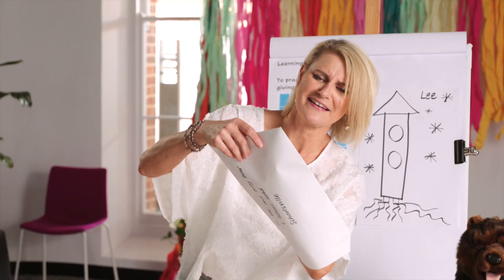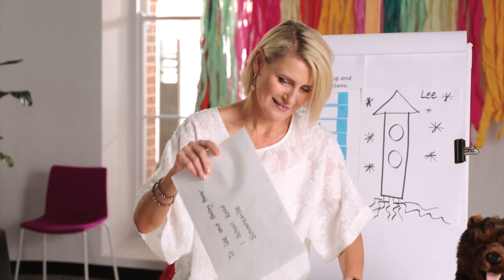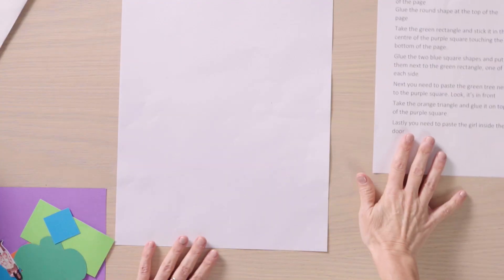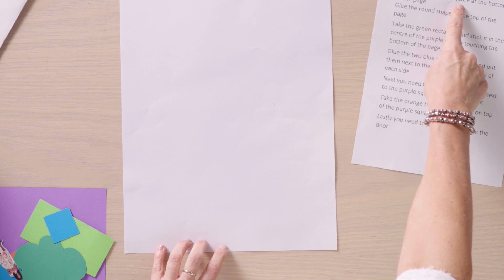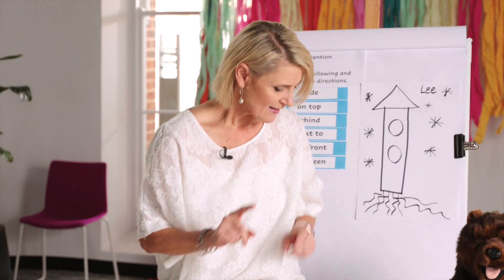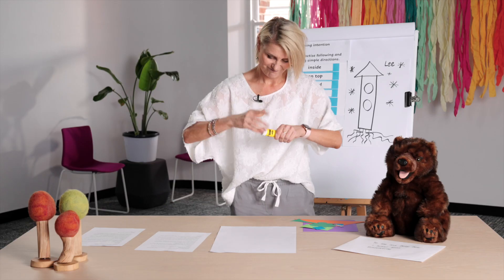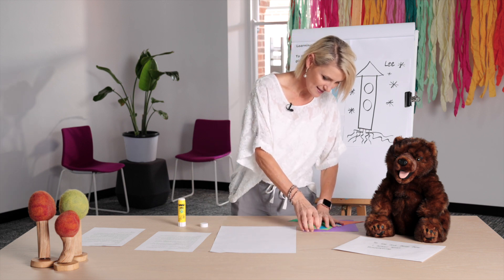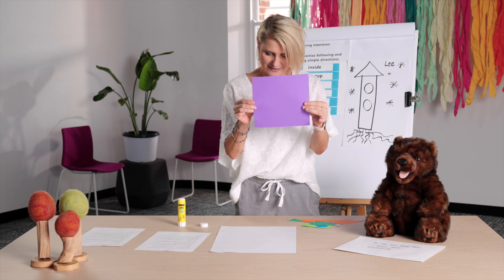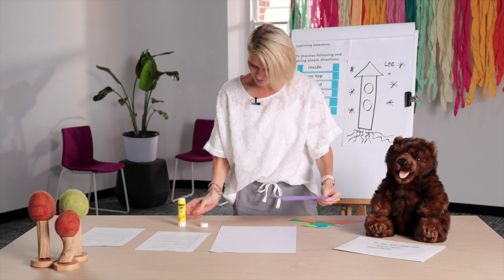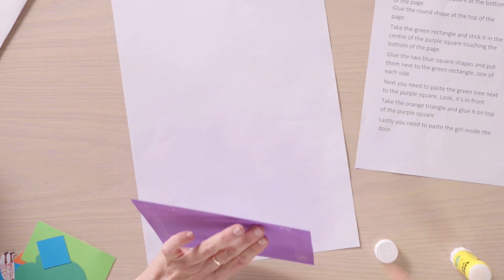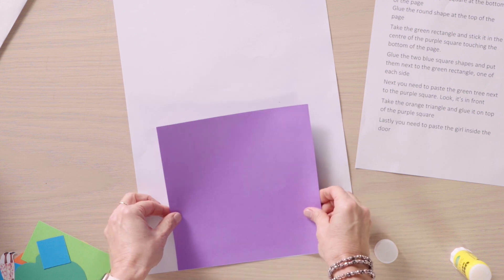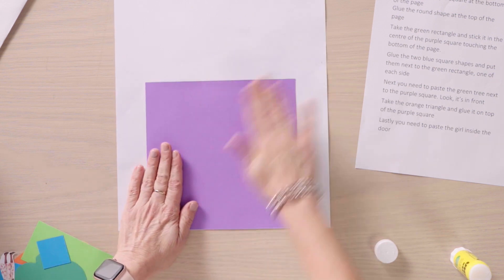I just noticed there was one last shape. The first direction is: first, glue the purple square at the bottom of the page. I need some glue. I can see purple and it's a square shape. Now where do I need to do it? At the bottom of the page. I'm going to put a little bit of glue around the edges and stick it at the bottom of the page. All done.